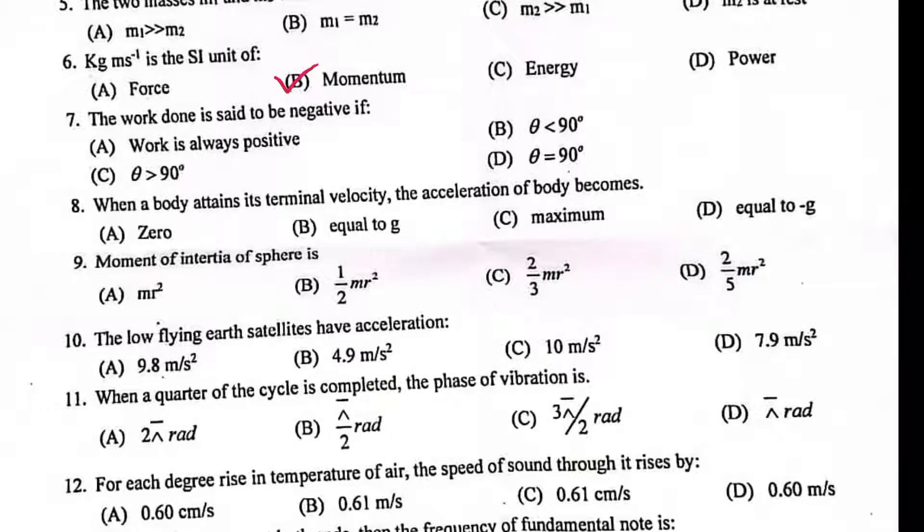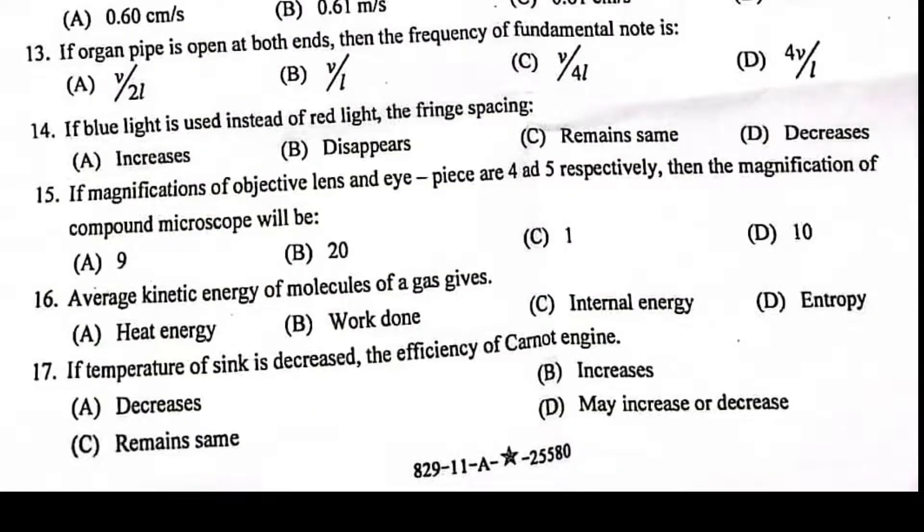The work done is said to be negative if theta greater than 90°. When a body attains terminal velocity, the acceleration of body becomes zero. Moment of sphere is 2/5 MR². Low flying Earth satellites have acceleration 9.8 m/s². When a quarter of a cycle is complete, the phase of vibration is π/2 radians. For each degree rise in the temperature of air, the speed of sound through it rises by 0.61 meter per second. The organ pipe is open at both ends, then the frequency of fundamental mode is v/2L. If blue light is used instead of red light, the fringe spacing decreases. In magnification, if objective lens and eyepiece are 4 and 5 respectively, then the magnification of compound microscope will be 20.